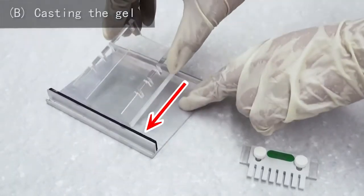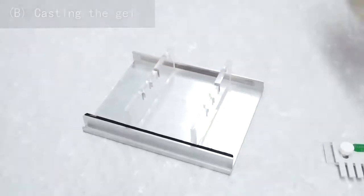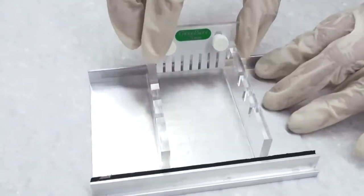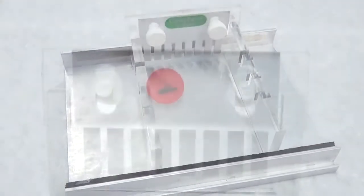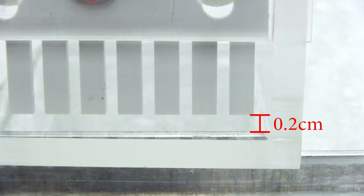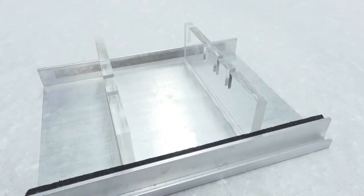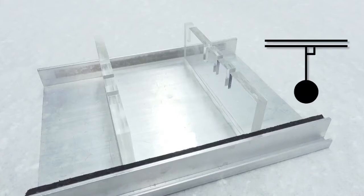Place the clean and dry gel tray into the casting plate. It should be a tight fit. Install the comb and adjust the height so the bottom of the comb is 0.2 centimeters above the inner surface of the tray. On the outside of the tray, mark 0.5 centimeters above the inner surface of the tray. Remove the comb and place the casting plate on a level table.